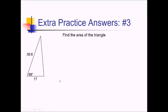For this triangle area problem, since I have two sides with the angle between them, I'm going to use my half-sine formula, one half AB sine C. So that's one half times one of the sides, 17, times 36.6, times the sine of the angle between them, 68.